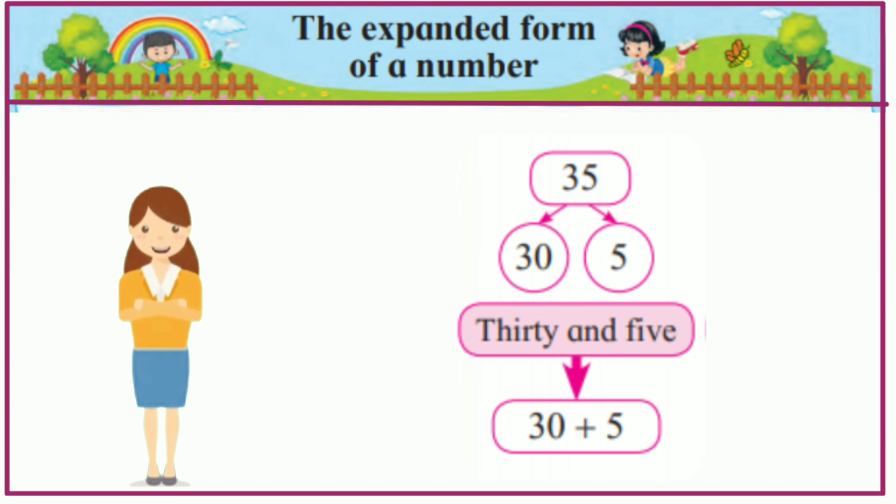35. The place value of 3 is 30 and the place value of 5 is 5. So expanded form will be 30 plus 5.